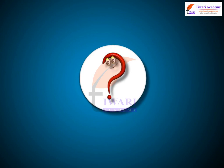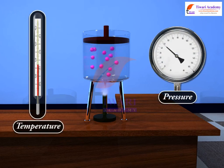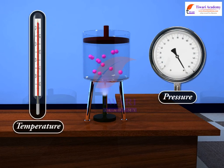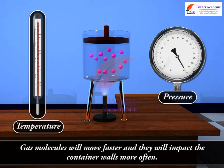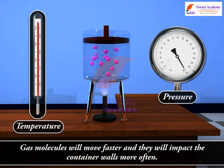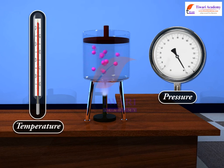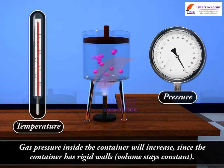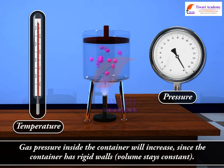Why? Suppose the temperature is increased. This means gas molecules will move faster and they will impact the container walls more often. This means the gas pressure inside the container will increase. Since the container has rigid walls, volume stays constant.